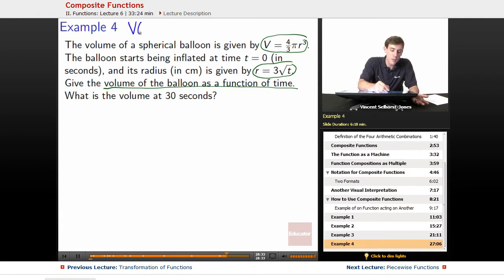So volume is really just a function of radius, because the only thing that can vary in there is the radius. So it's four thirds pi r cubed, simple function. And then what about radius? Well radius is a function based off of time, because the only thing that can vary in it is time: three root t.